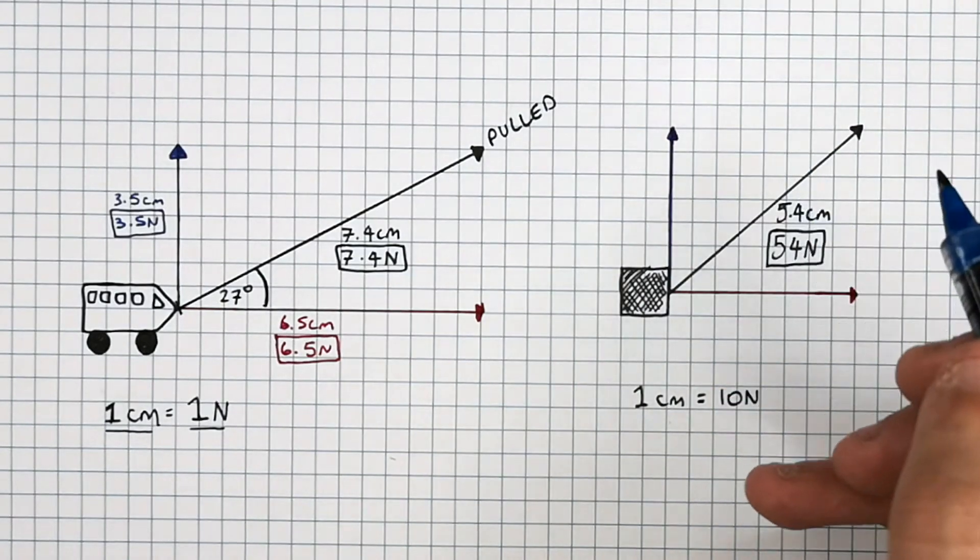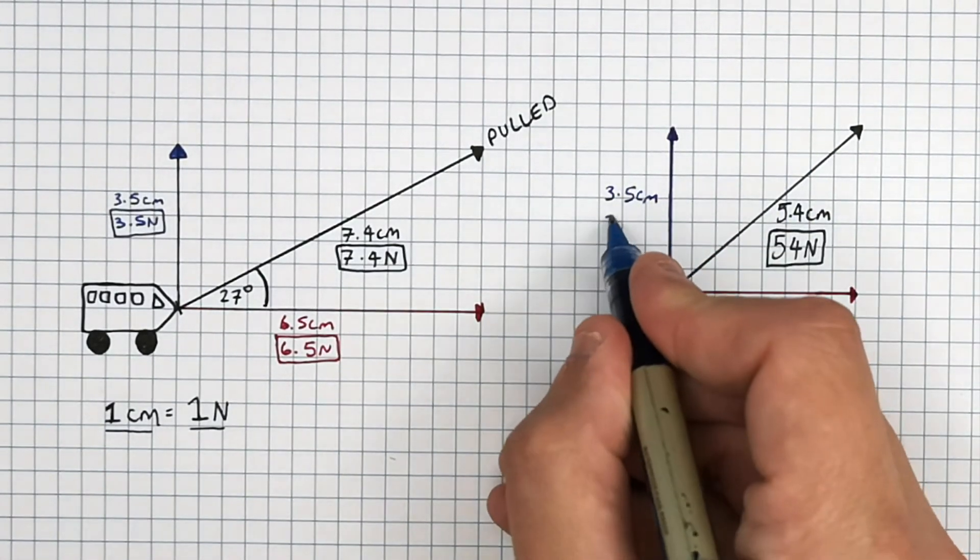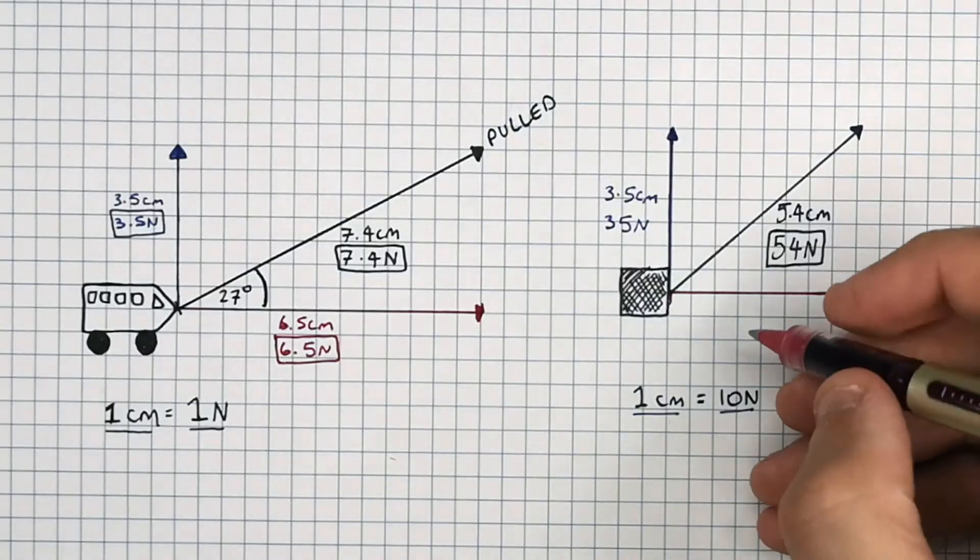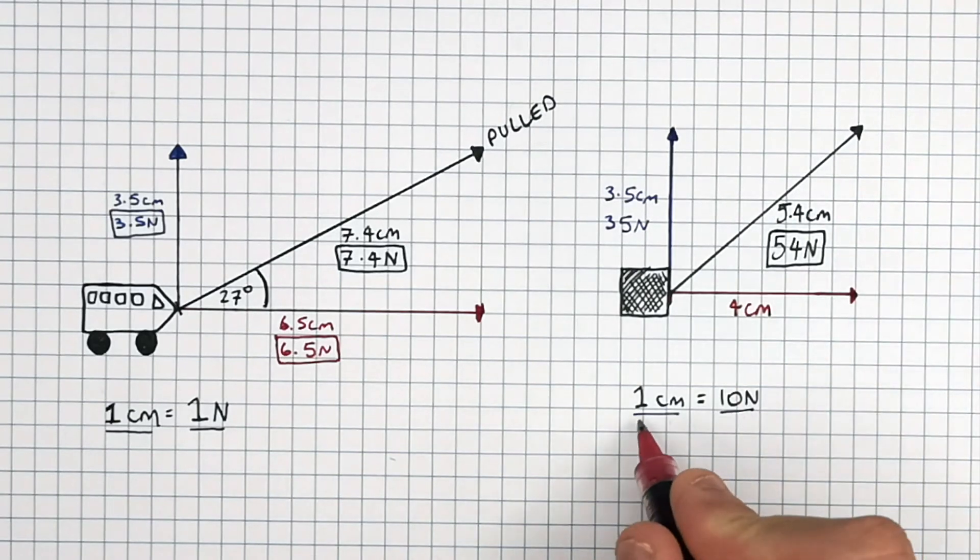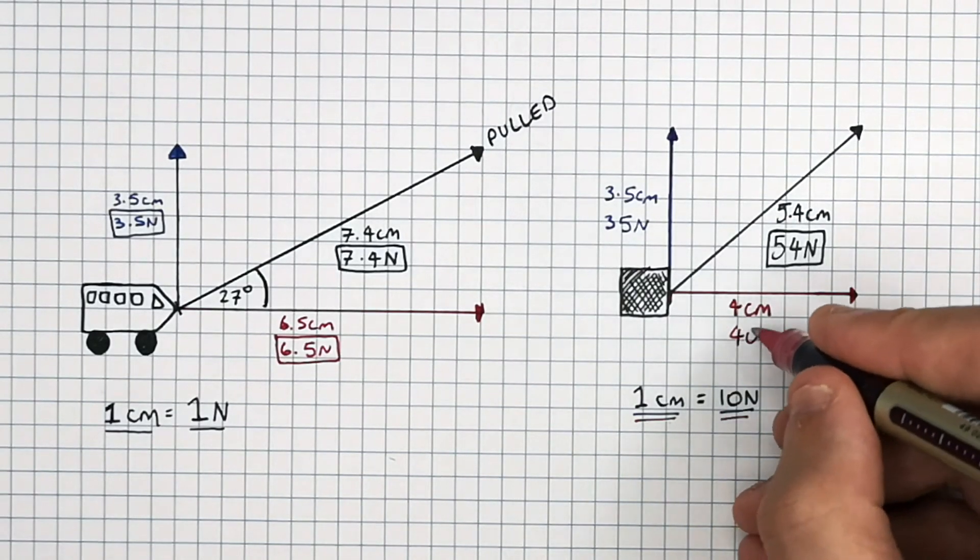The vertical component equals 3.5 centimeters, which means the magnitude of the vertical component is 35 newtons. And the horizontal component equals 4 centimeters. Using our scale, this means the magnitude of the horizontal component is 40 newtons.